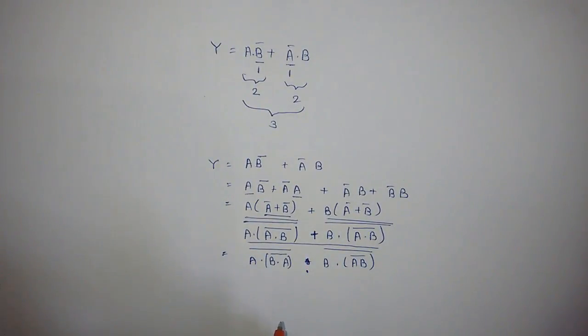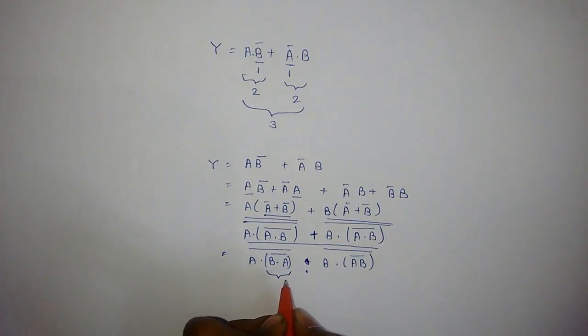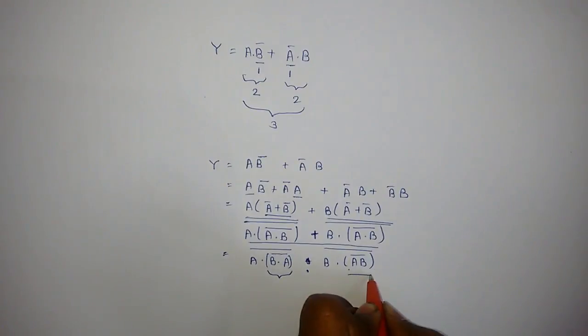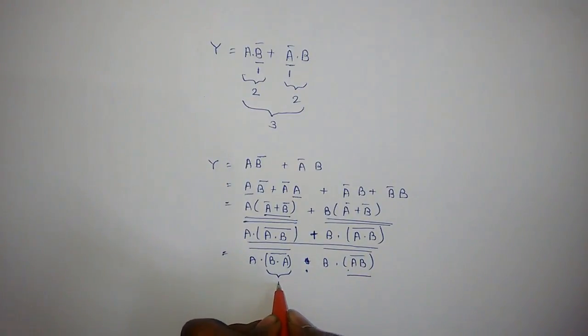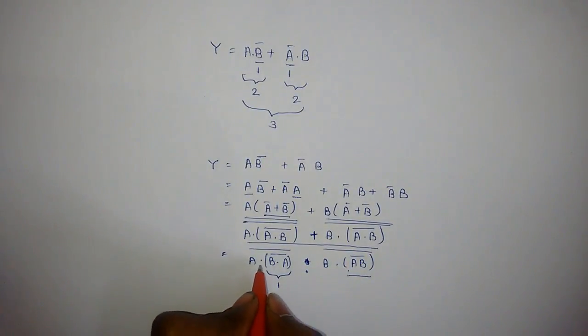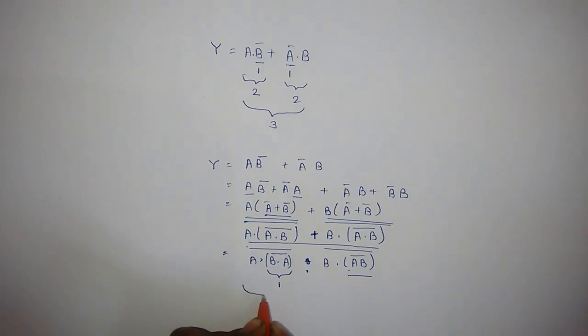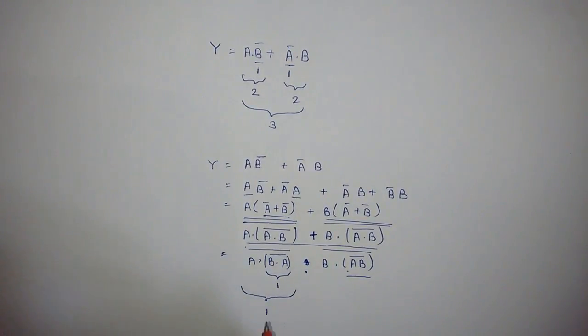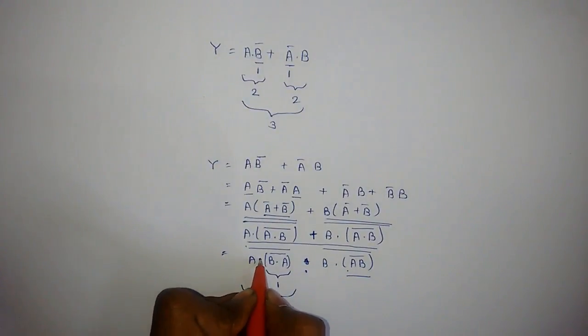Now if you try to simulate this, you will require one NAND gate for this operation. We will use the same input, so no NAND gate will be required for this. Then for this operation, we will require one. This is not multiplication, this is NANDing.